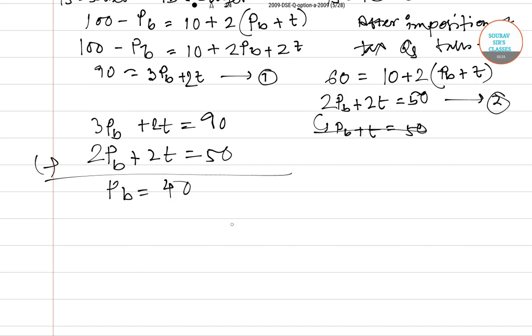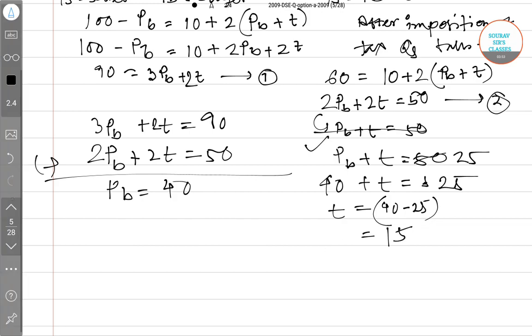Now if PB equals 40, then put 40 over here. So 2 times 40 plus 2T equals 50. So 80 plus 2T equals 50. Basically T equals 40 minus 25, which is 15. Though we have a negative sign we're just ignoring that. So T equals 15, which is the right answer.